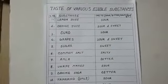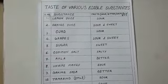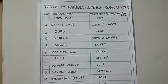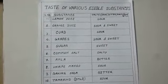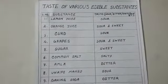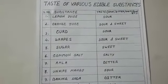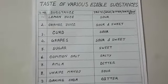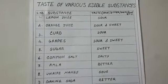We use a large number of edible substances in our daily life such as lemon, salt, sugar, tamarind, and curd. Do they have the same taste? No, they have different tastes.